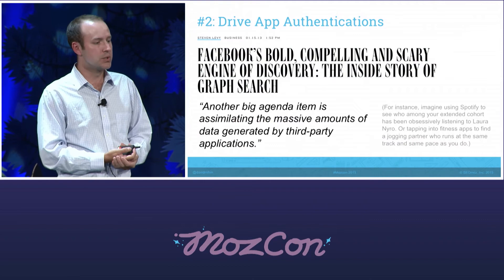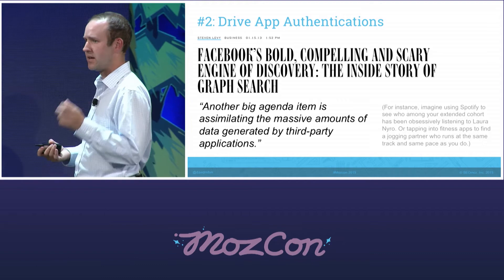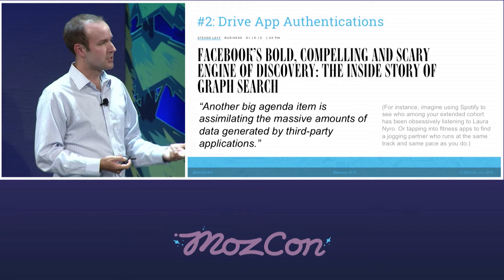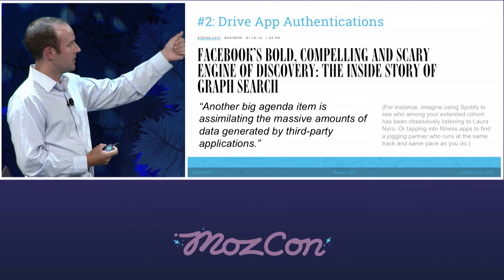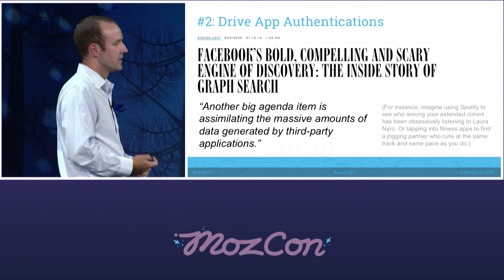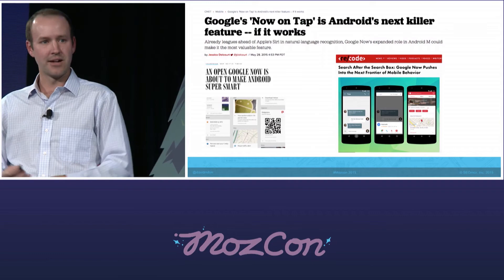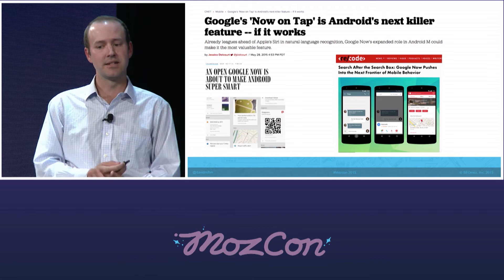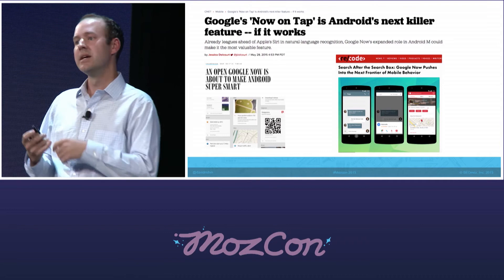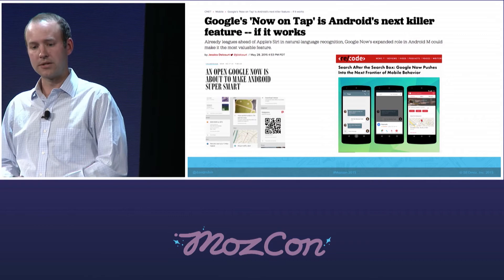Number two: in addition to making sure your app is incredibly indexable using the Open Graph protocols that Marshall and Cindy mentioned yesterday, I would encourage you to try to drive as many app authentications of people's Facebook accounts as possible. From the initial Wired coverage of the Graph Search launch, a big agenda item is assimilating the massive amounts of data generated by third-party applications. It's clear this is becoming a thing — not only for Facebook, but Google Now on Tap is very much after the same kind of data. The extent to which your app can be indexable and Facebook can see the activity of its users in your app will probably help you long-term as the mobile ecosystem evolves.